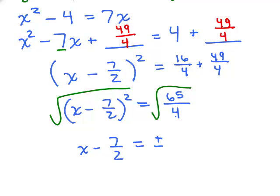The square root of 65 over 4. Let's simplify that. That's just the square root of the top, which is square root of 65, over the square root of the denominator, and the square root of 4 is just 2. Both fractions have the same denominator. We're almost done.